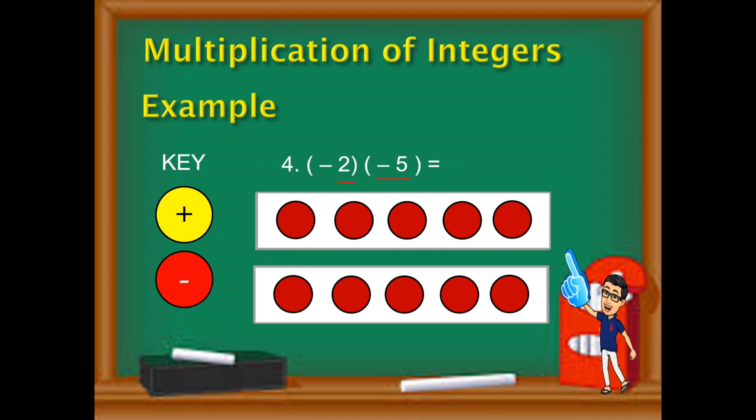Balik ulit tayo dahil negative ang unang integer. Ibig sabihin, kukunin natin ang opposite color ng ating mga chips. So bilangin na rin natin. 1, 2, 3, 4, 5, 6, 7, 8, 9, and 10. So dahil yellow siya, at ang ibig sabihin ng yellow ay positive. So ibig sabihin, when we multiply negative 2 times negative 5, the answer is 10.